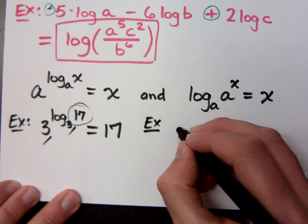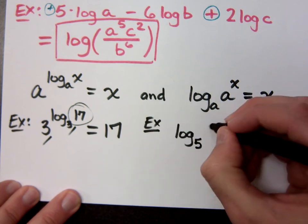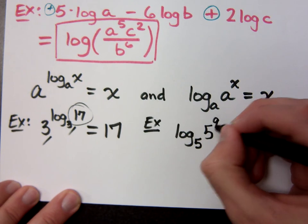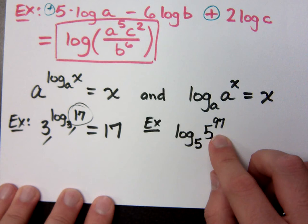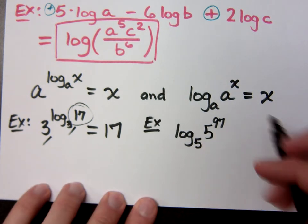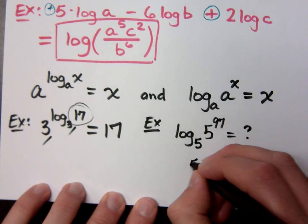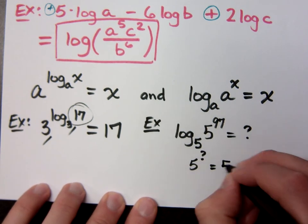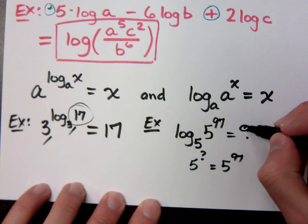If I were to do an example, if I have log with a base 5 of 5 to the 97th power, you don't need to worry about what 5 to the 97th power is. Your thought process would be this: 5 to what power equals 5 to the 97th? So it's just going to be 97, right?